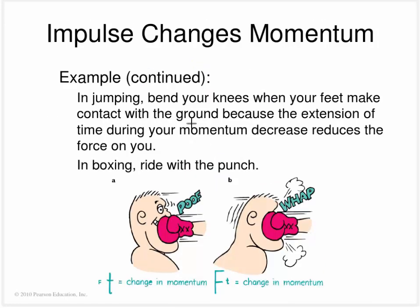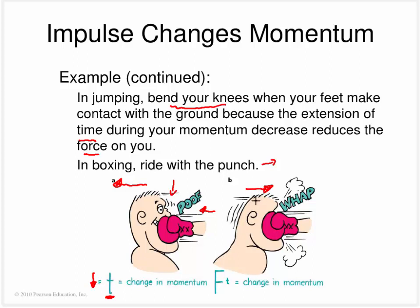More examples of decreasing momentum: if jumping from a large distance, bend your knees on landing rather than straight-legging it — this extends the time and reduces the force on you. In boxing, rolling with a punch moves backwards as the punch arrives, extending the time of contact and decreasing the force. Rolling into the punch instead shortens contact time and greatly increases the force — which doesn't sound like fun.